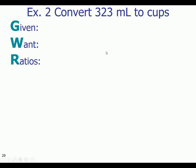So what number is given to us in the problem? 323 milliliters, and the W stands for want. We want cups. So what we want to stop and do is figure out what is the relationship between milliliters and cups.